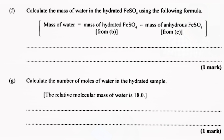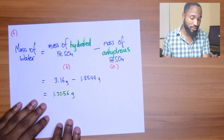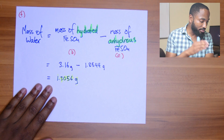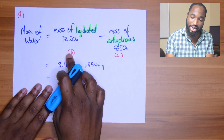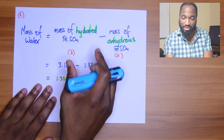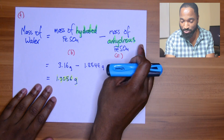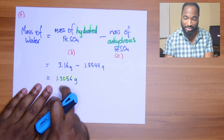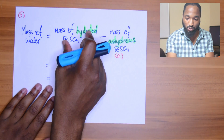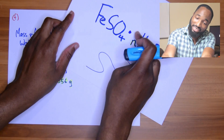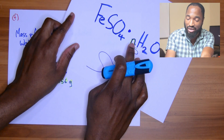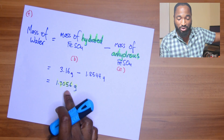Part f: calculate the mass of water in the hydrated iron sulfate. They even gave you the formula: mass of water = mass of hydrated iron sulfate minus mass of anhydrous iron sulfate. That's logical - the one with water minus the one without water gives you the actual mass of the water. 'Anhydrous' means without water, so hydrated minus anhydrous equals the mass of water. We need this to work towards finding n.